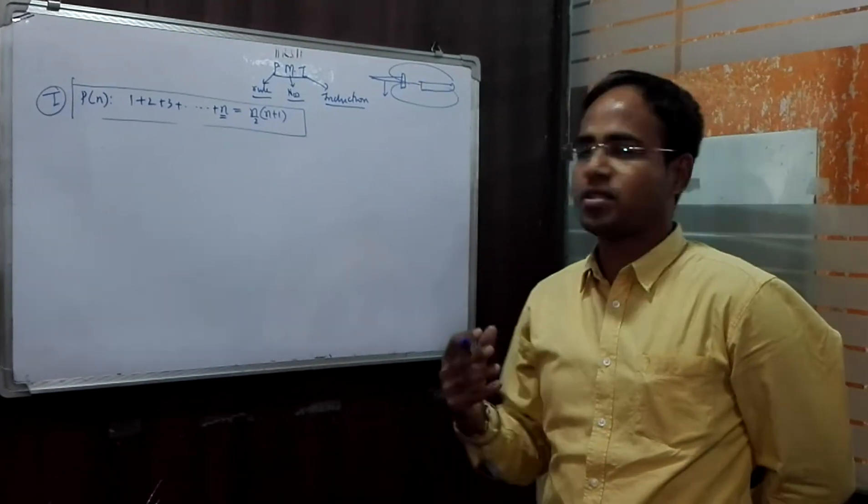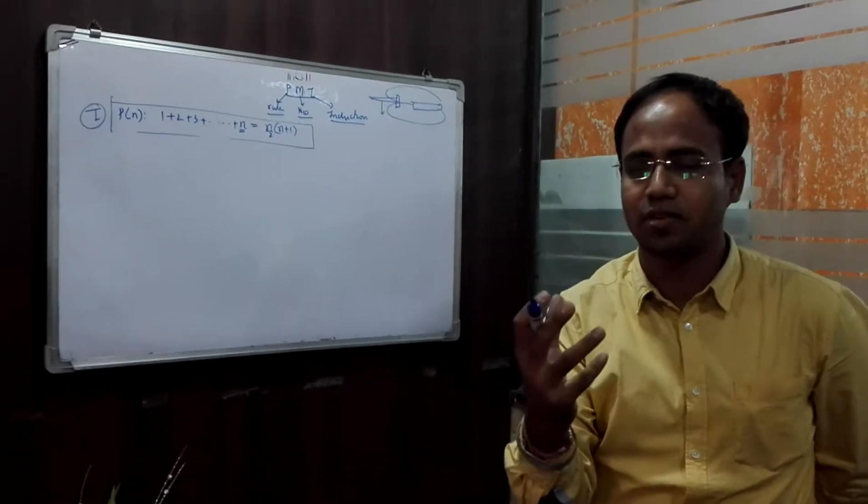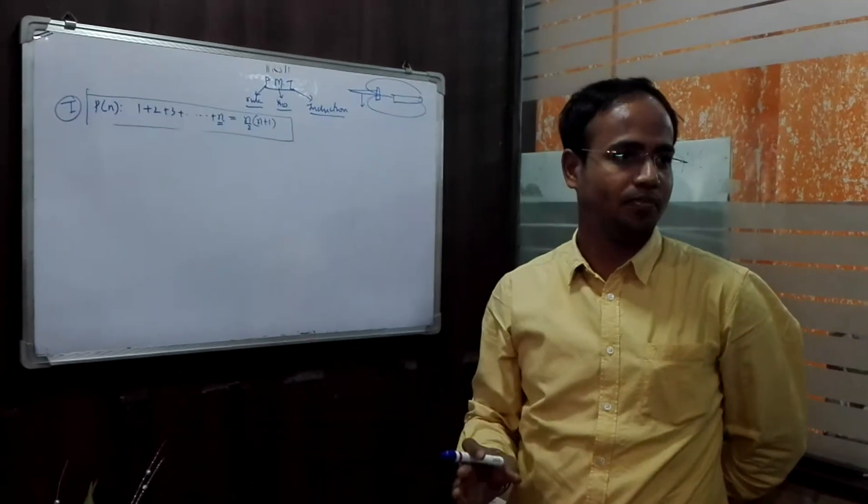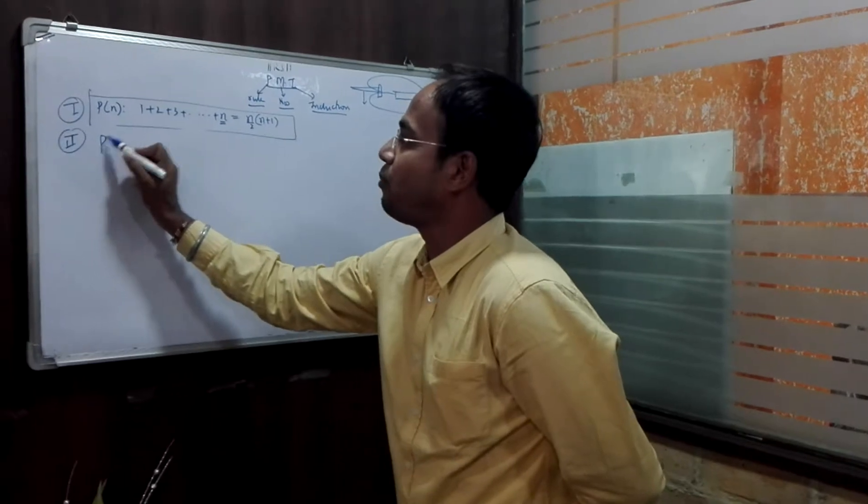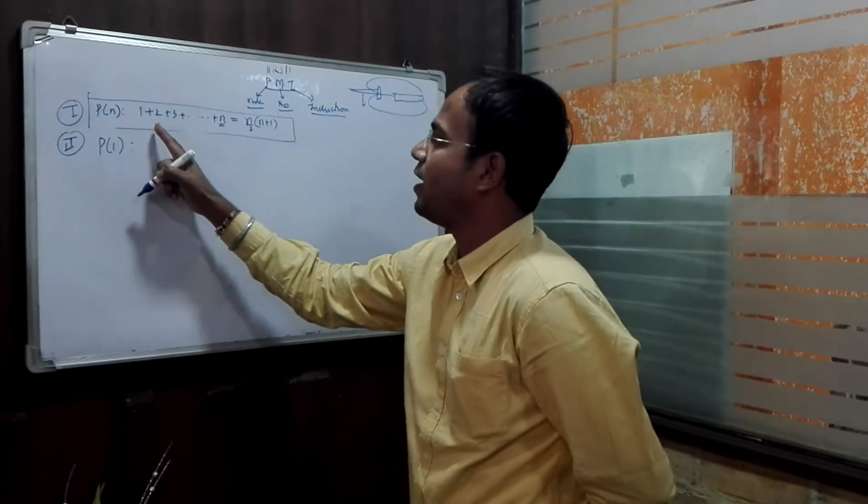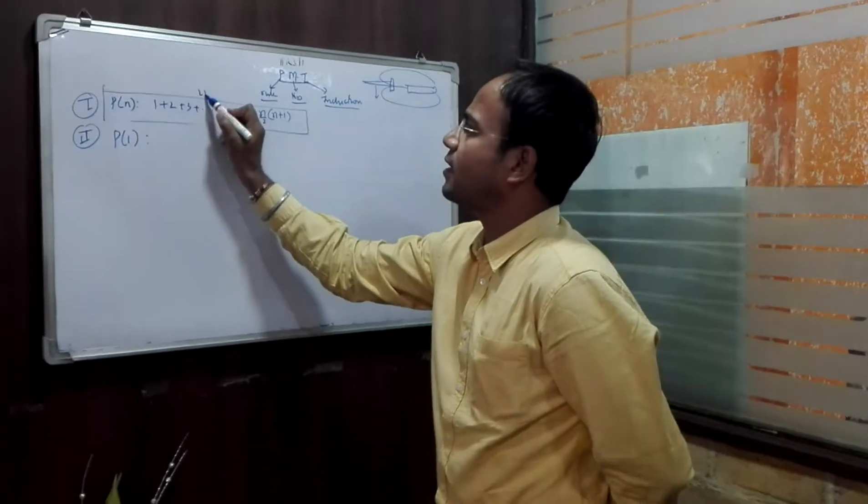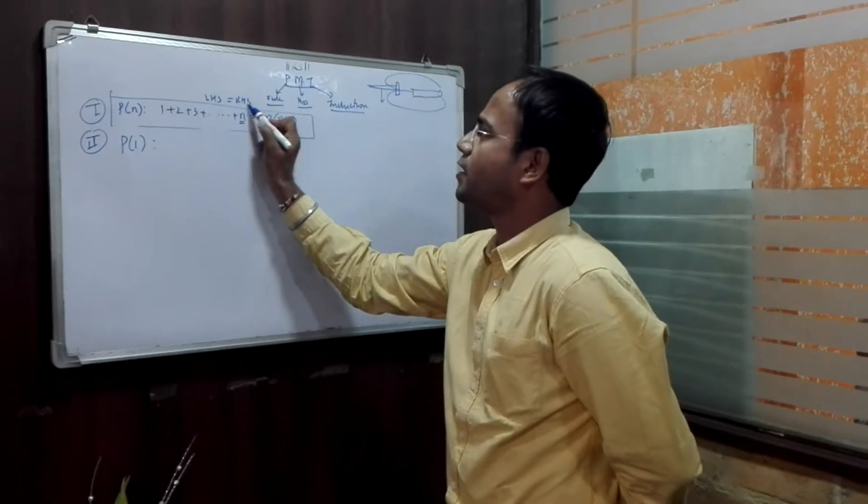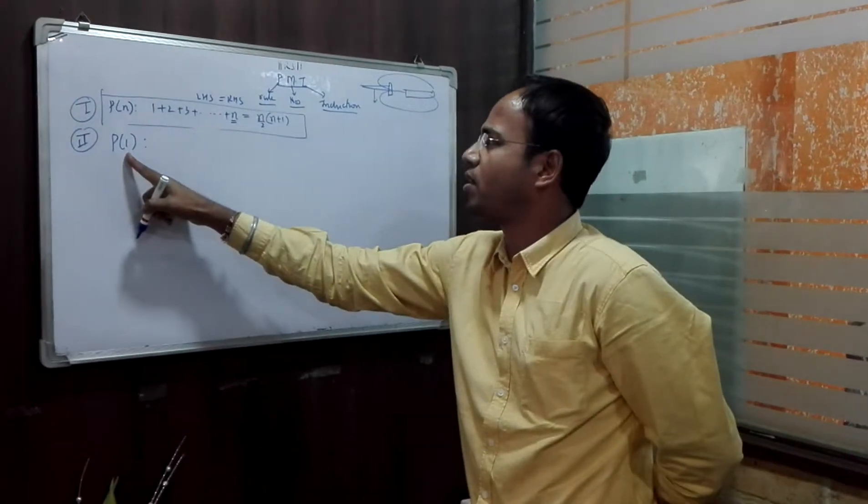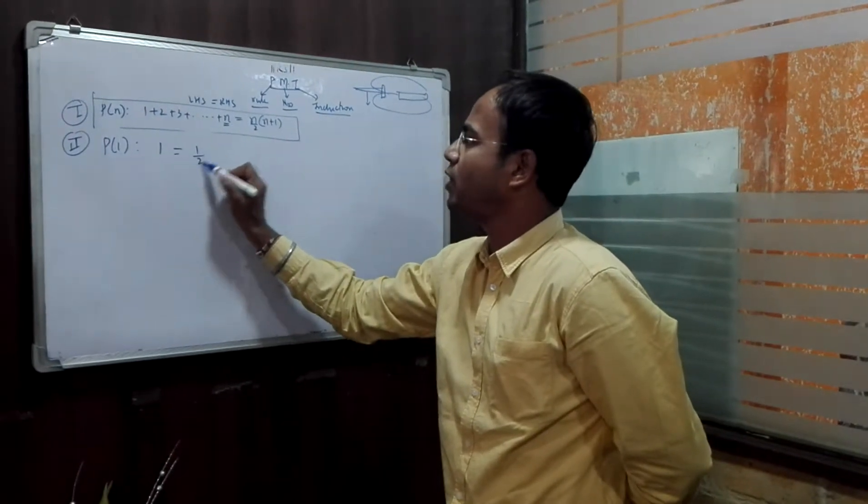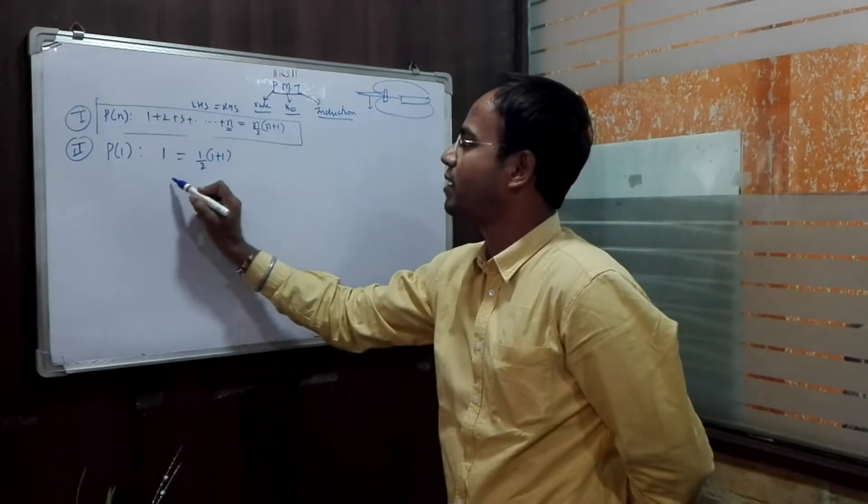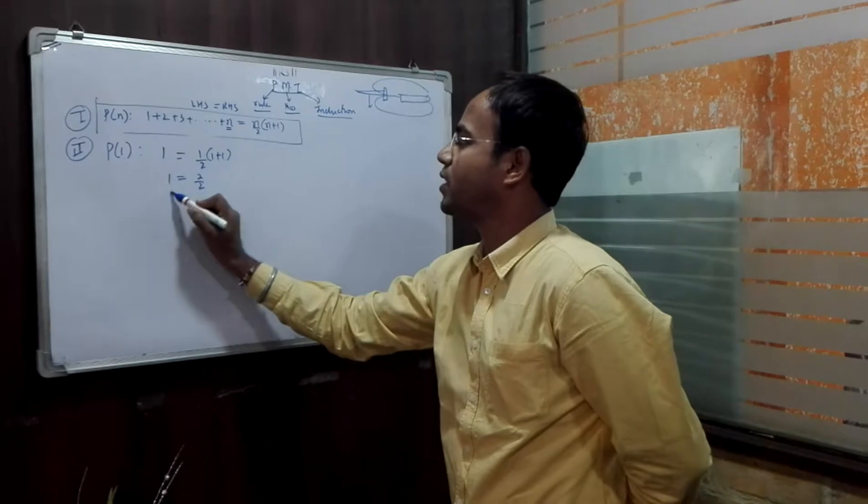So there are four steps in PMI. If you understand these four steps, then you can solve any damn question under the sun. First step is this. Second step, what we do is we put P(1) just to cross-verify. This is proof. So I prove P(1) is true or not. So P(1), here we put 1 and here we put 1 by 2 times 1 plus 1, which is nothing but 1 equals 2 by 2, which is nothing but 1 equals 1.